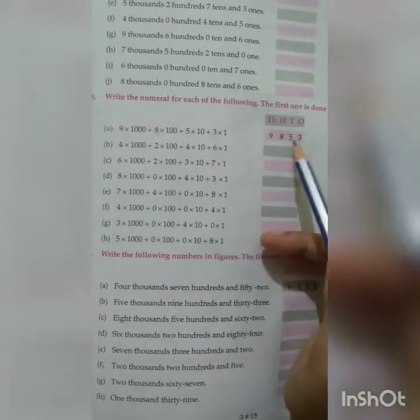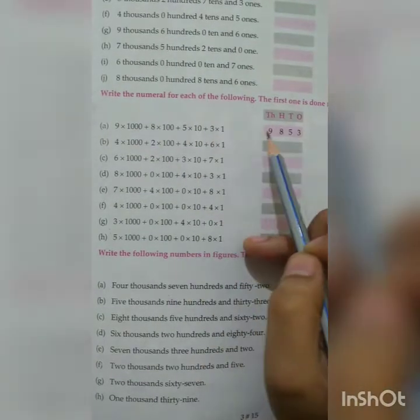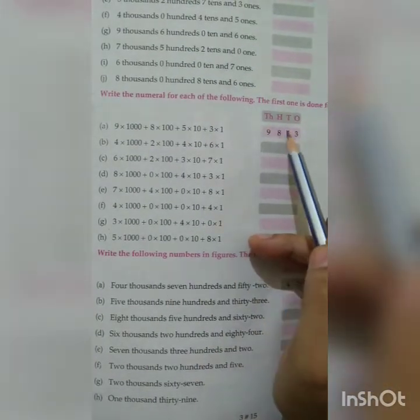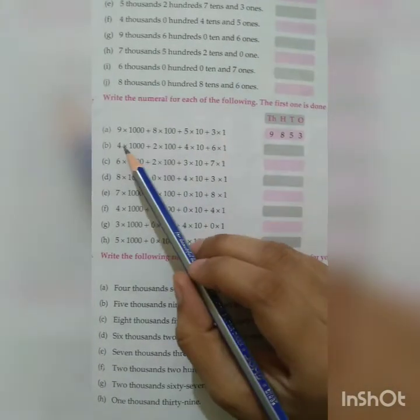5 tens. 5 is at 10's place. 3 ones. So 9,853. The number is 9,853.